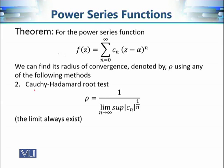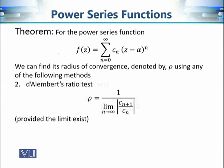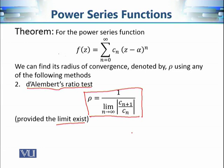The second test is the Cauchy-Hadamard root test. In this case, we calculate the limsup, which always exists whether the sequence converges or diverges. Calculating the limsup is relatively harder, but we have the guarantee it will always exist. The third way is based on D'Alembert's ratio test, where we calculate the limit of |Cₙ₊₁/Cₙ|. Again, for some sequences the limit exists and for some it does not.